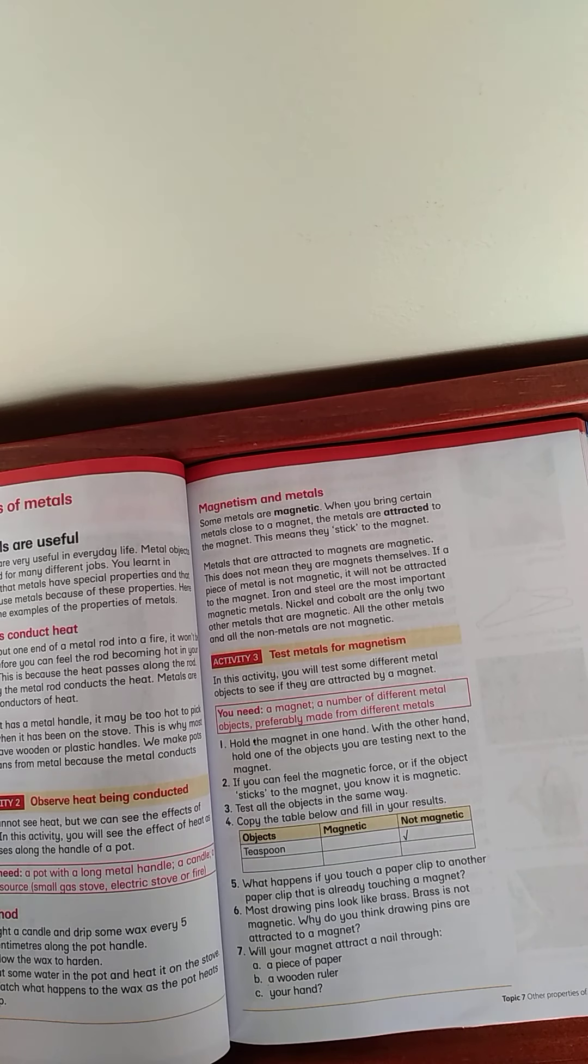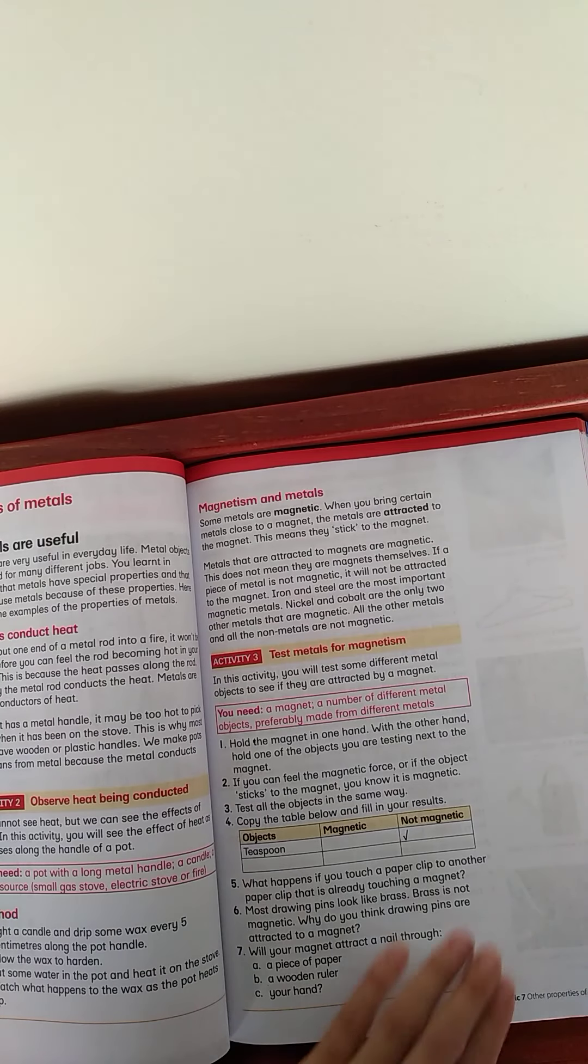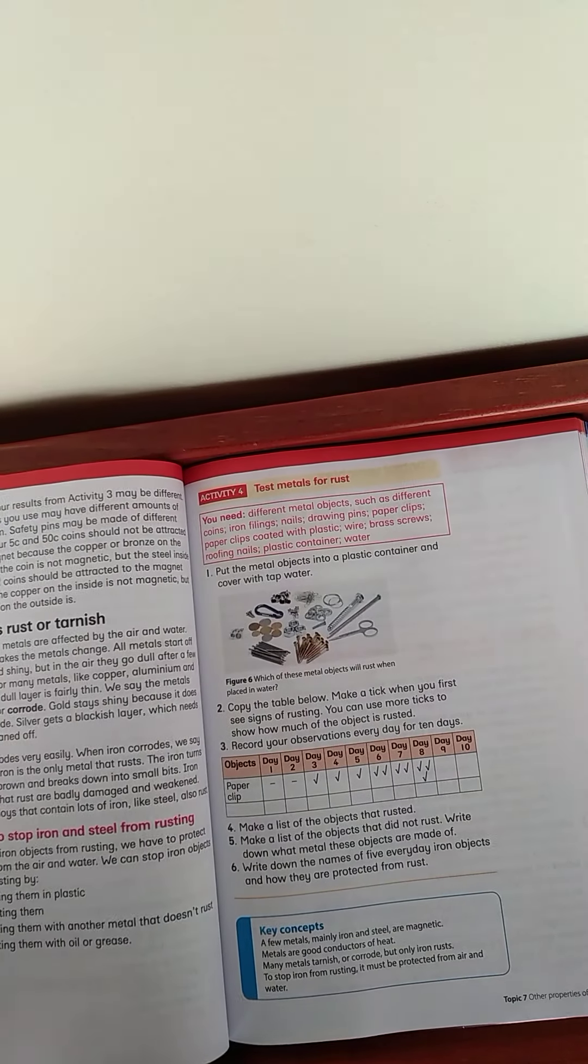And what happens if you touch a paper clip to another paper clip that is already touching a magnet? Most drawing pins look like brass. Brass is not magnetic. Why do you think drawing pins are attracted to a magnet? Will your magnet attract a nail through a piece of paper, a wooden ruler, and your hand? So, that will depend on how strong the magnet is. Let's go to page 76.